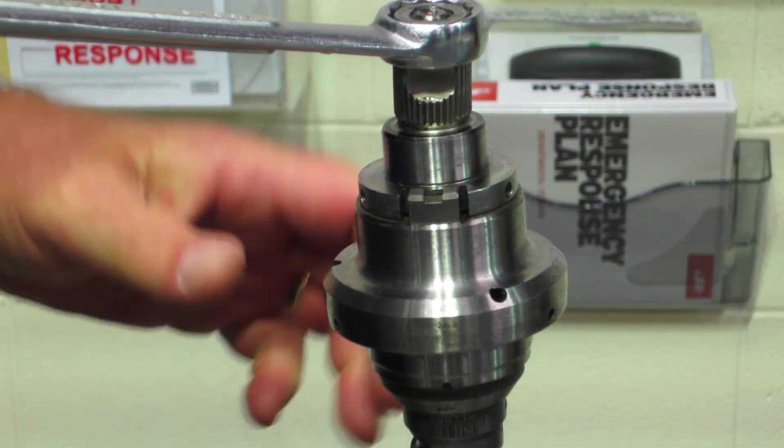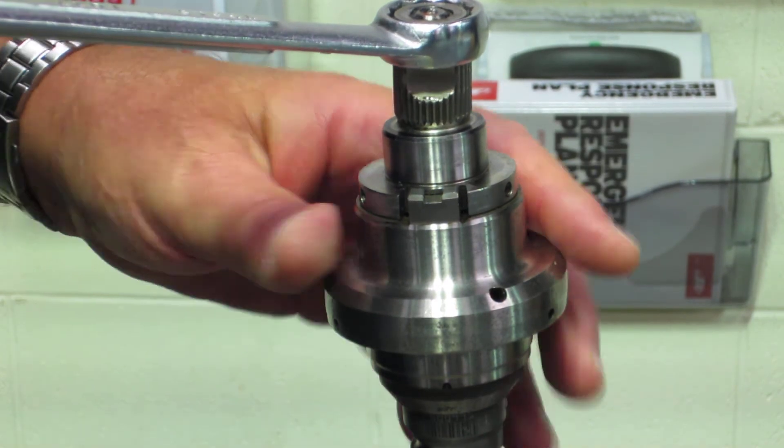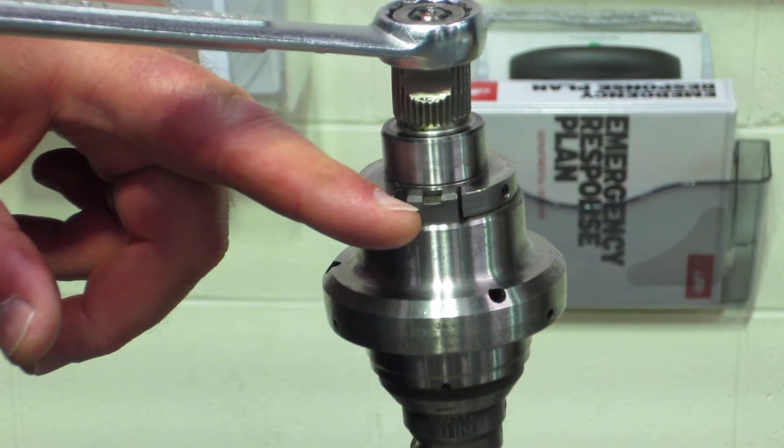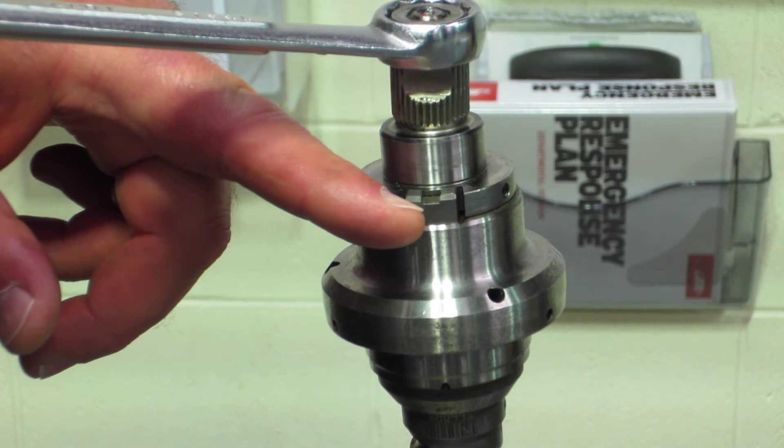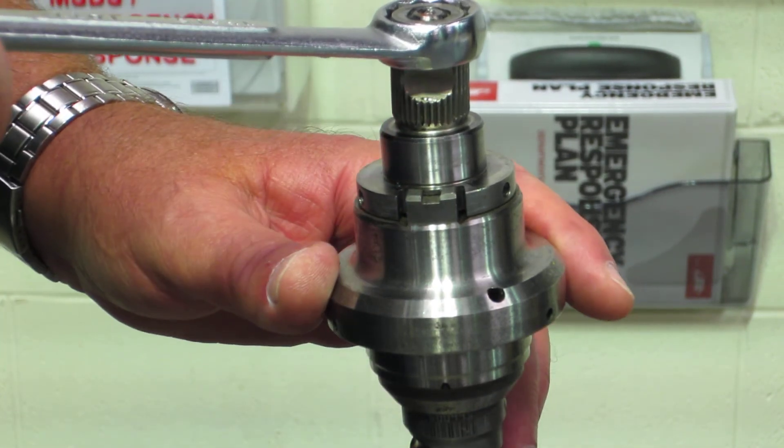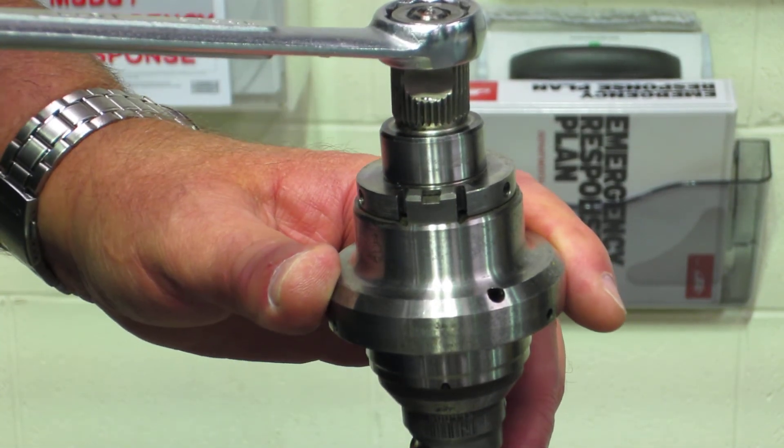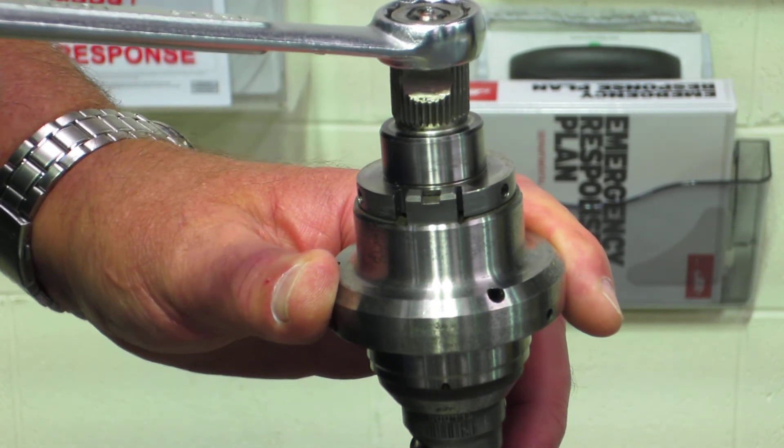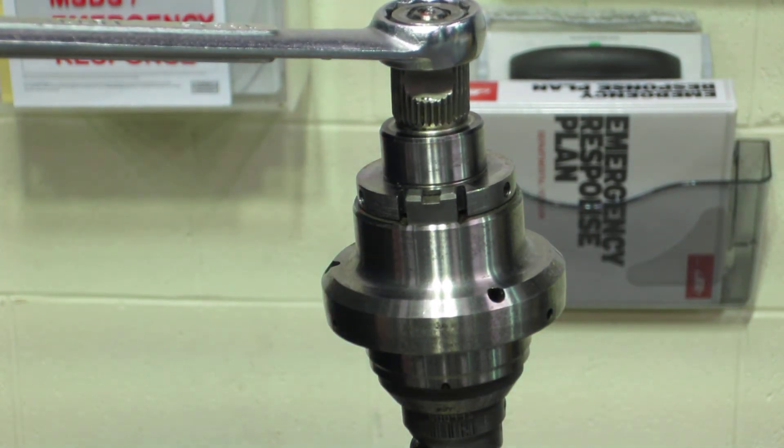What I want you to notice here: as I force the steering wheel, notice the torsion bar is actually twisting over, and as it twists over, it's actually opening the control valve. But notice, as soon as I let go, it returns back to the center position.